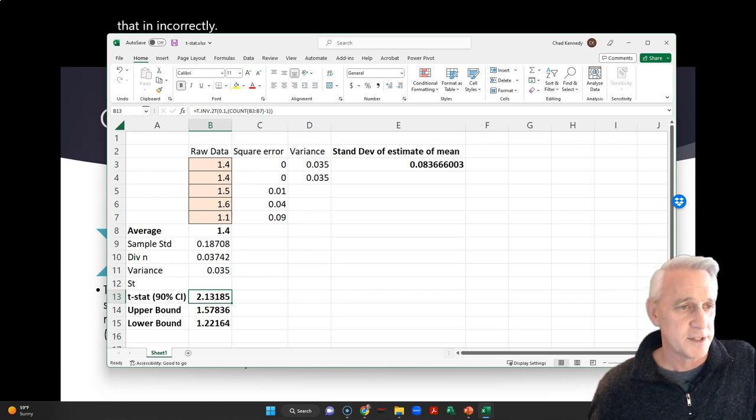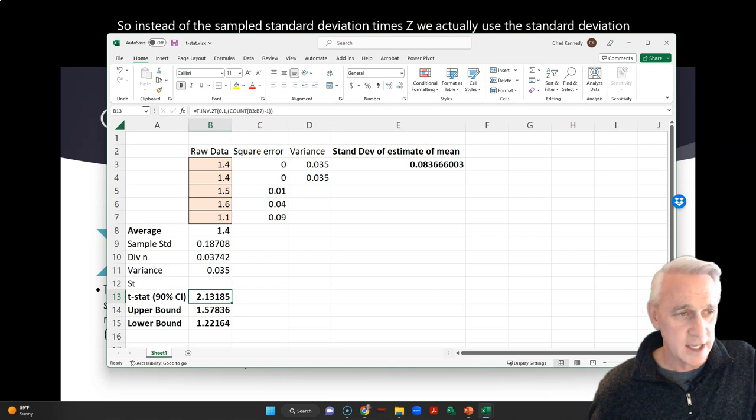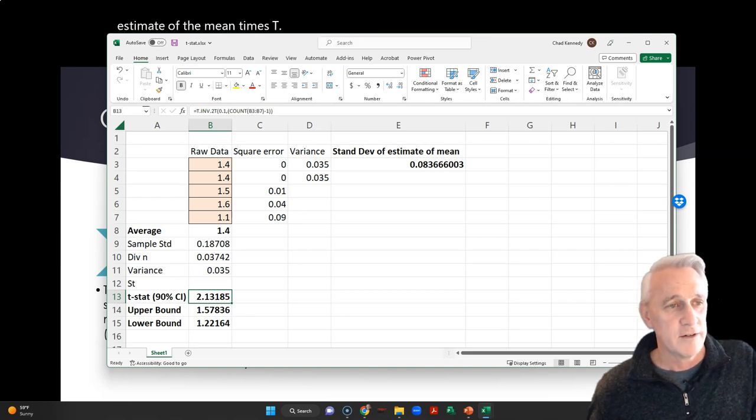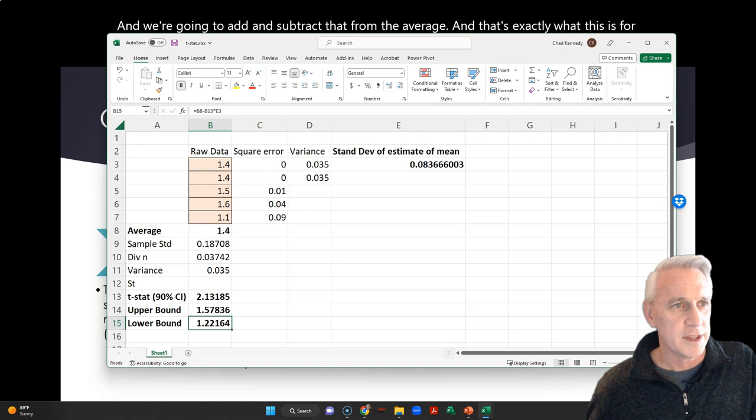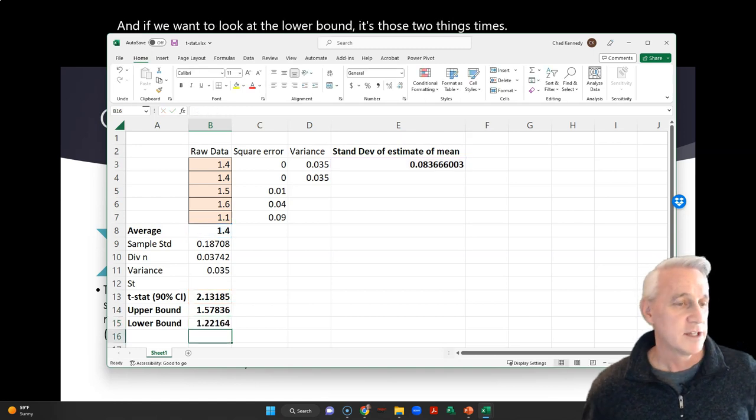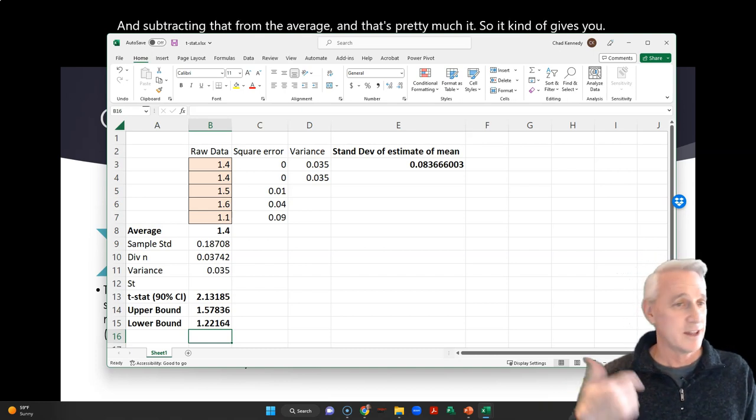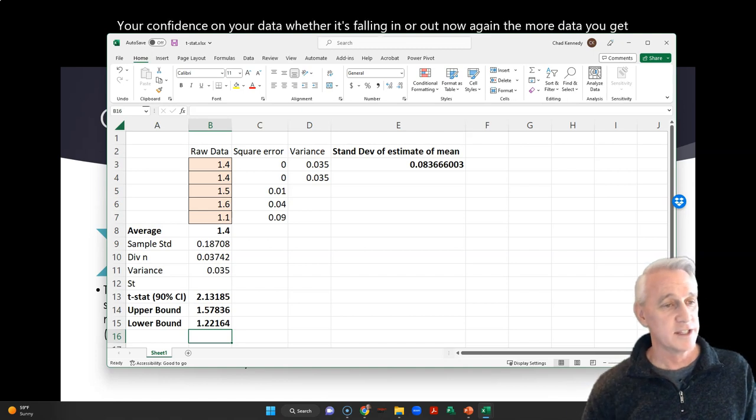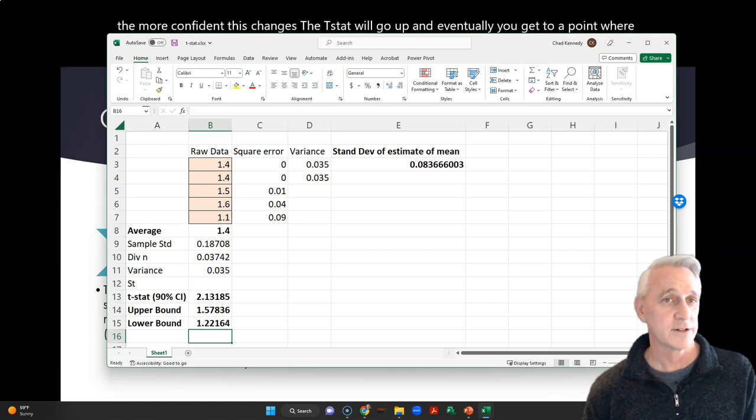So this is what we're going to use instead of the z stat. So instead of the sampled standard deviation times z, we actually use the standard deviation estimate of the mean times t. And we're going to add and subtract that from the average. And that's exactly what this is. For the upper bound, it's those two things multiplied and added to the average. And if we want to look at the lower bound, it's those two things times and subtracting that from the average. And that's pretty much it. So it kind of gives you your confidence on your data, whether it's falling in or out. Now, again, the more data you get, the more confident this changes, the tstat will go up. And eventually, you get to a point where you could use the z stat and use standard classical statistics.